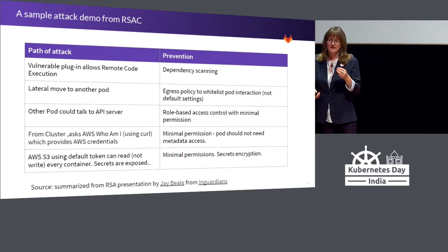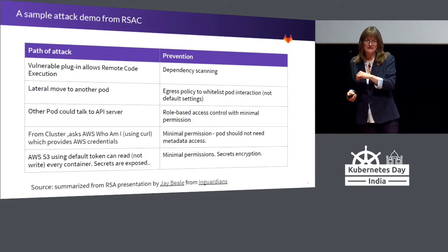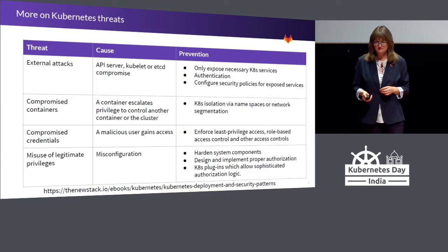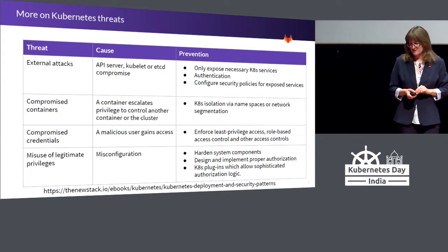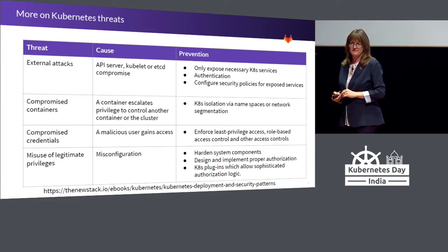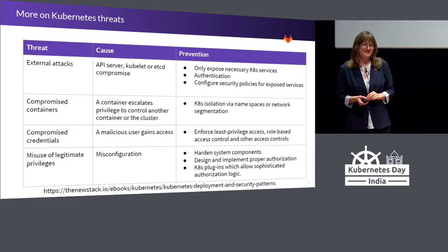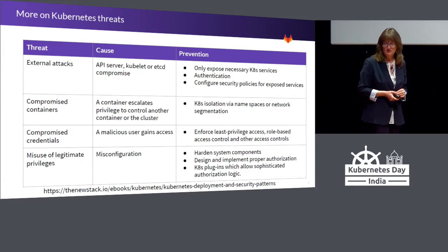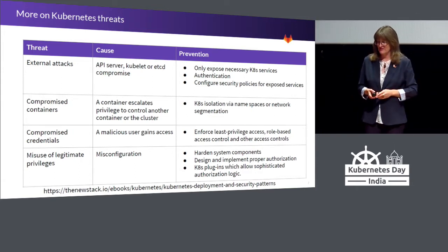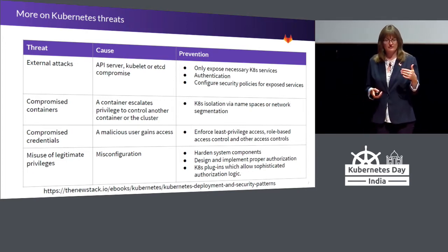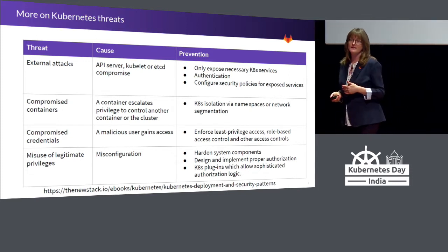It goes back to the weak link, which oftentimes is the open source dependency — so you want to make sure that you're scanning those. In terms of Kubernetes threats, The New Stack has a good eBook here. GitLab is all about reusing things when we can and giving credit where it's due. This eBook is really helpful in terms of looking at the different threats and ways of preventing them.